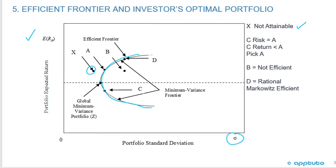An important one is the Global Minimum Variance Portfolio, here at Z. That's the point along the efficient frontier that has the least amount of standard deviation — the least amount of risk. Just to the right of that, we've got two spots, A and C. They have the same risk, the same portfolio standard deviation.